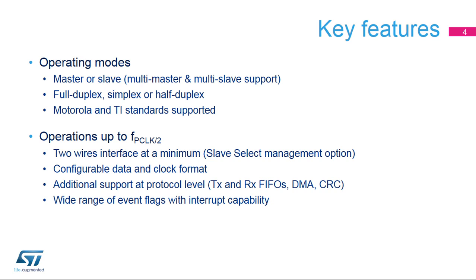The STM32 SPI offers various operating modes explained in more detail in this presentation. The communication speed can't exceed half of the internal bus frequency, and a minimum of two wires is required to provide the serial data flow synchronized by clock in a single direction. An optional hardware slave-select control signal can be added. The data size and transmit shift order are configurable, as well as the clock signal polarity and phase. At the protocol level, the user can use specific data buffers with an automatic cyclic redundancy check, or CRC calculation, and transfers through the DMA controller. There are a wide range of SPI events that can generate interrupt requests.